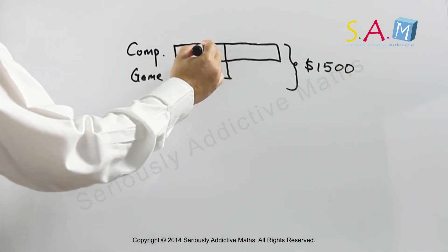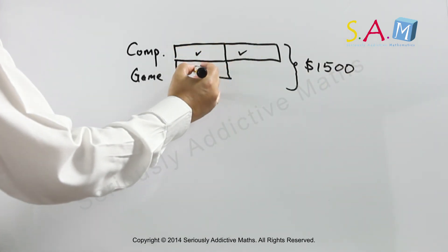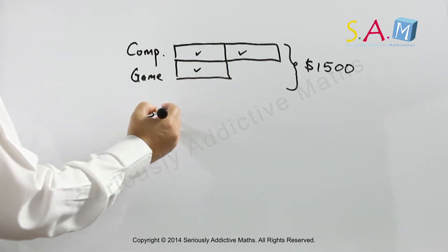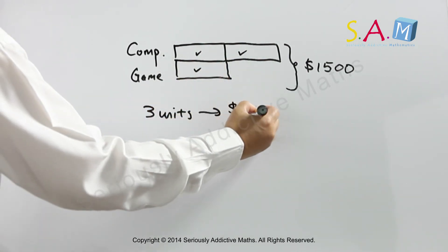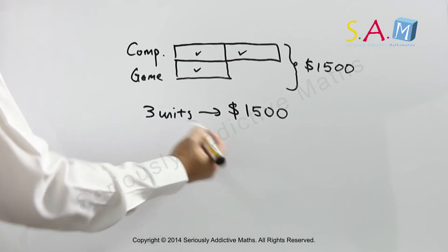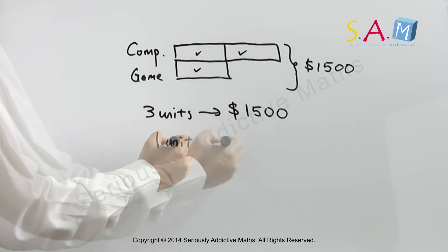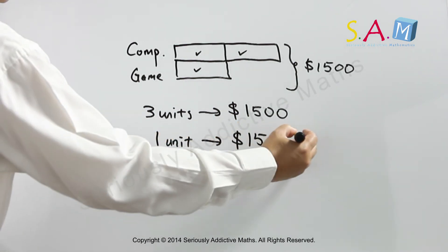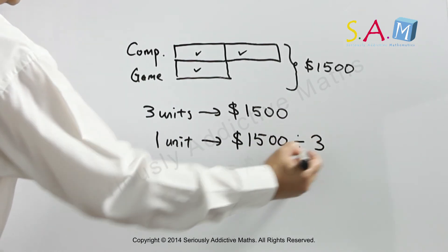So here we have 1 unit, 2 units, and 3 units. So we have 3 units, which is $1,500. So the game console being 1 unit is found to be 1,500 divided by 3, which is actually $500.